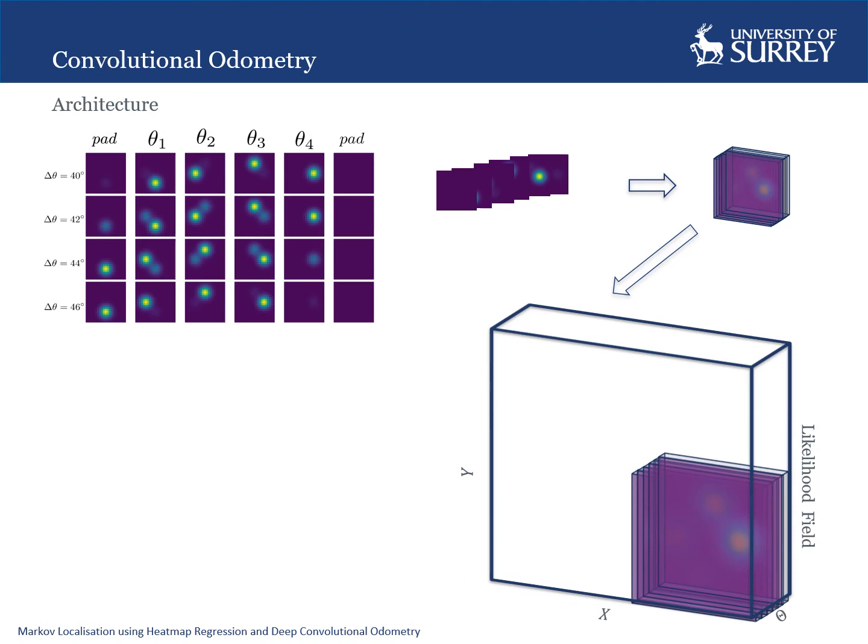The result is a method that can estimate the x, y, and theta pose of a camera while maintaining uncertainty estimates for the whole state space.